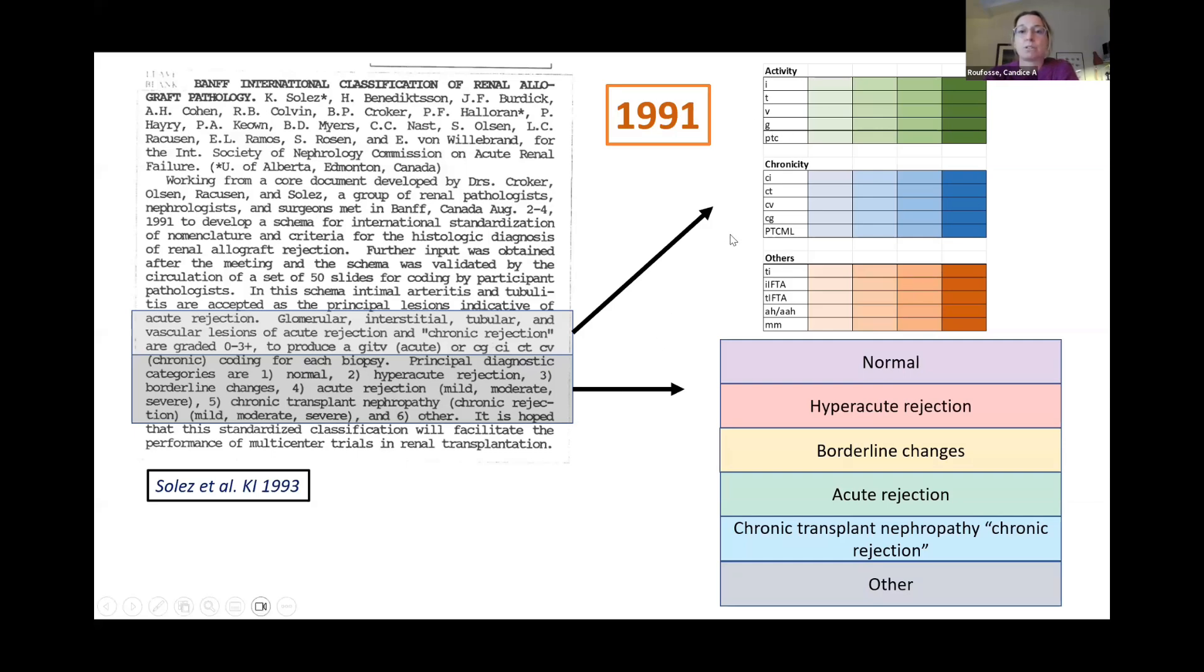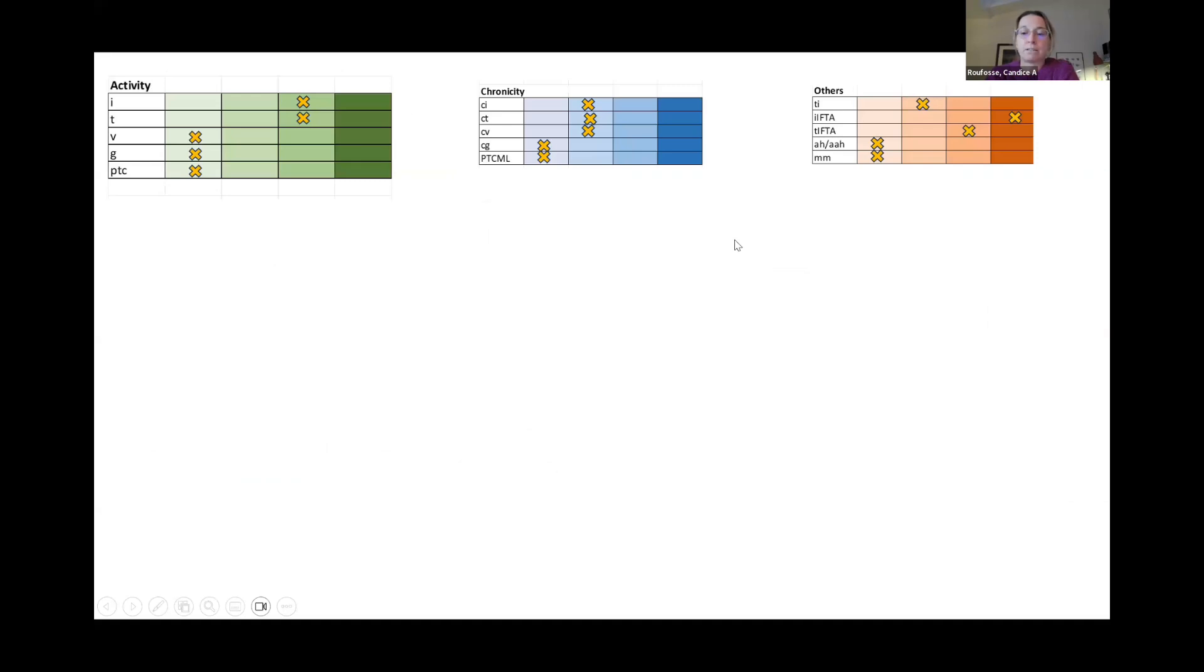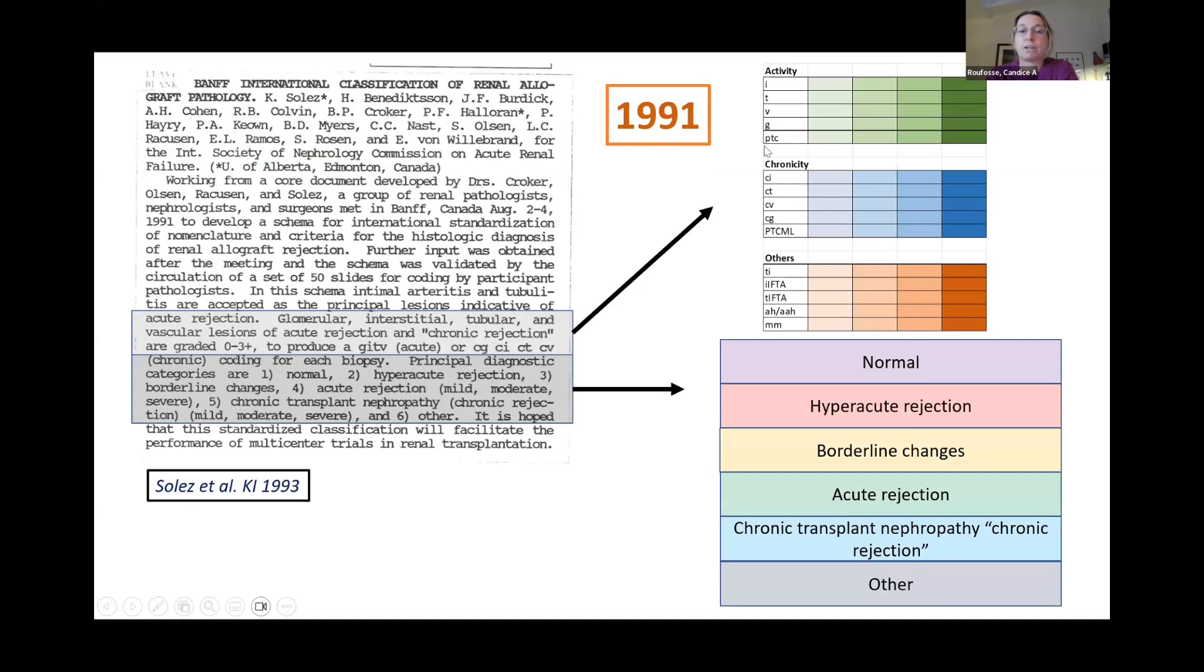So this component up here, I'm hoping you can see my arrow, but perhaps maybe you can't. Activity and chronicity scores of the Banff classification. So this is a sort of semi-quantitative granular scoring of all the features that we see in the biopsy.